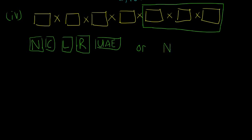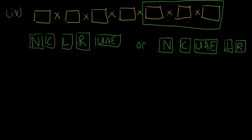Or we could have N, C, then U, A, E, and then L, R — again the vowels move as one block. If we treat each letter and the vowel group as separate items, there are actually five boxes: the four consonants plus the one vowel block, because the three vowels are moving all together.